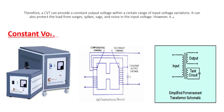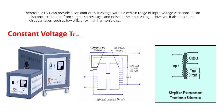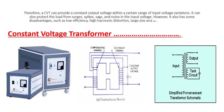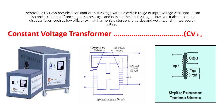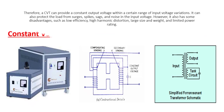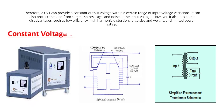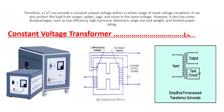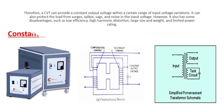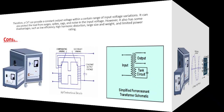A CVT can also protect the load from surges, spikes, sags, and noise in the input voltage. However, it also has some disadvantages, such as low efficiency, high harmonic distortion, large size and weight, and limited power rating.